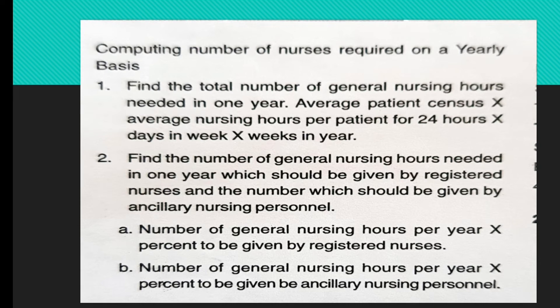Further steps include determining policies regarding staff positions and rotation. Then, using the formula to find the total number of general nursing hours needed in one year: average patient census multiplied by average nursing care hours per patient day for 24 hours, multiplied by days in a week, multiplied by weeks in a year. This gives the number of registered nurses and ancillary or supportive nurses required on a yearly basis.